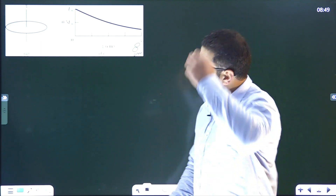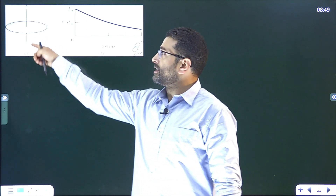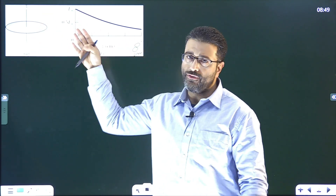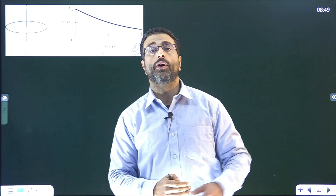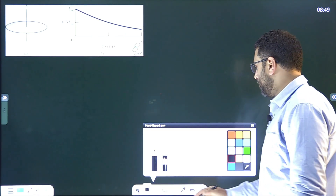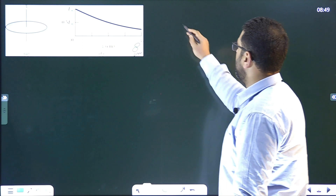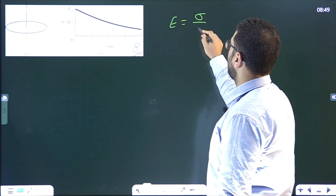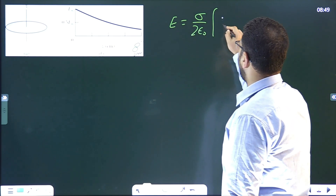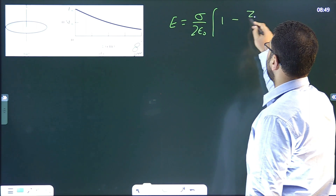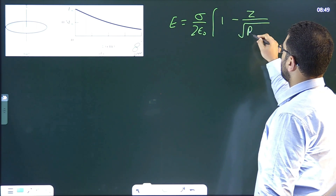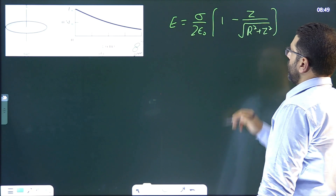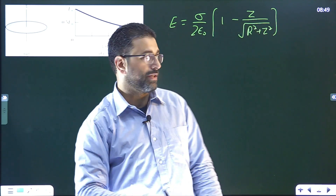Field ki variation disk ke wajay se along its central axis woh yahaan par dee gai hai. Formula to hume pahle pata hai — from problem number 34, aapko pata hona chahiye. Field that is equal to sigma divided by 2 epsilon_0, times (1 minus z divided by under root of r square plus z square). Yeh humare paas formula hai for the electric field on the axis of a disk.